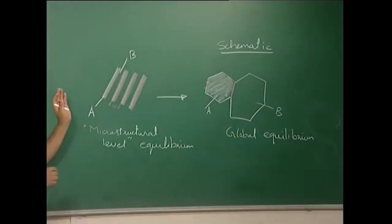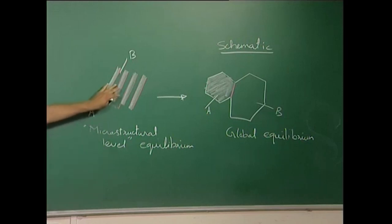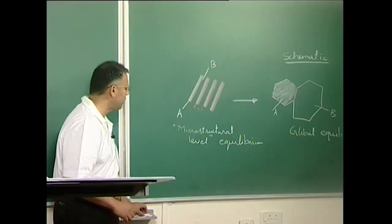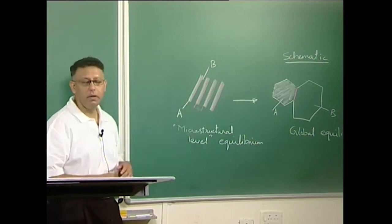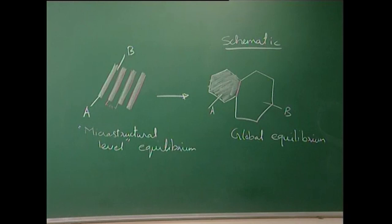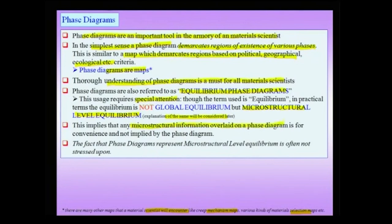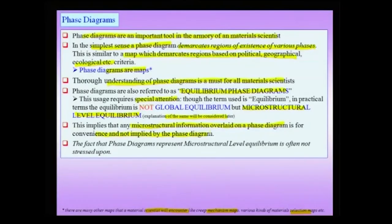Rarely we allow the system to go from the micro-structural configuration to global equilibrium. In other words, whenever we are talking about phase diagrams, we tolerate micro-constituents and microstructures. Therefore, the phase diagrams we consider are not global equilibrium phase diagrams — though we call them equilibrium phase diagrams, they are more accurately micro-structural level equilibrium phase diagrams. Often you would note that micro-structural information is overlaid on phase diagrams, and this is done for convenience to extend the utility of the phase diagram.